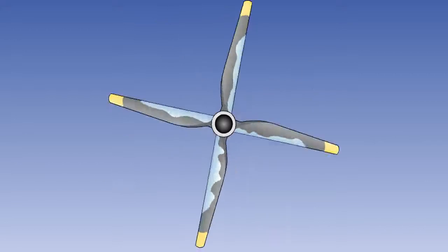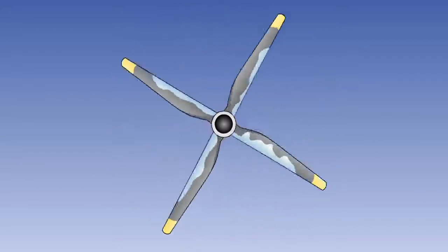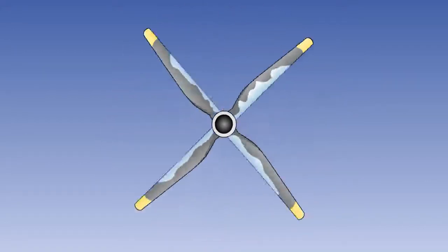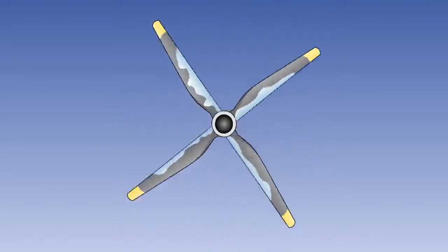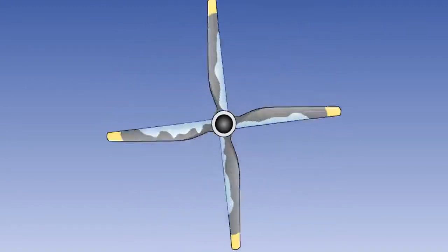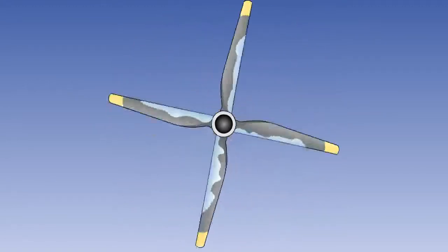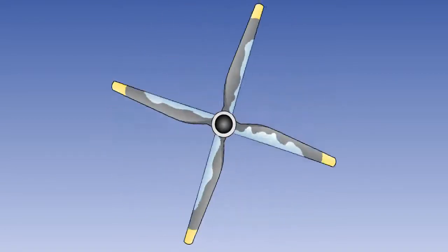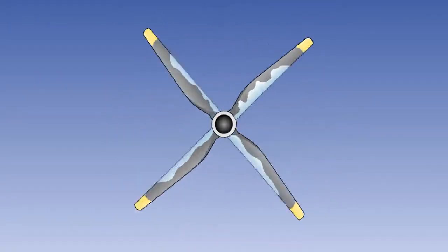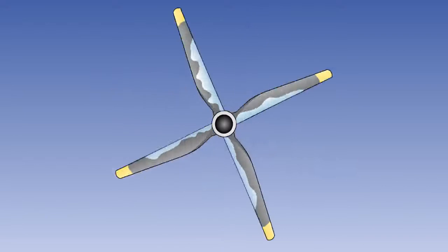Ice formation on a propeller blade produces distortion to the aerofoil section, causing a loss in efficiency and possibly causing unbalance, which can lead to destructive vibration. The build-up of ice must be prevented, and this is usually done by electrically heating the propeller blades.